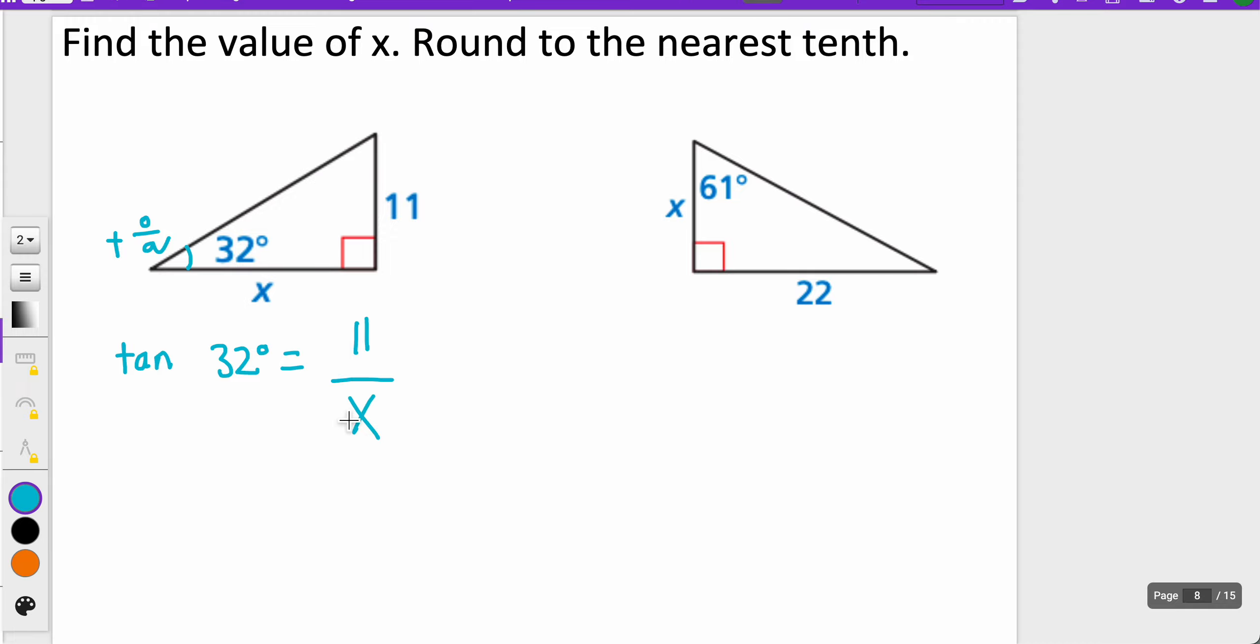What we want to be able to do here is to first try to solve for X. I'm going to multiply both sides by X so I can bring X to the top. So now I'm going to have X times the tangent of 32 degrees is equal to 11. Then to solve for X, I'm going to divide both sides by the tangent of 32 degrees.